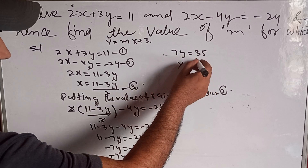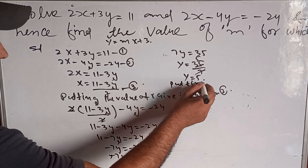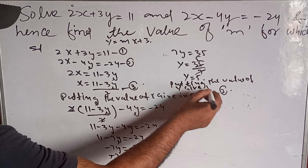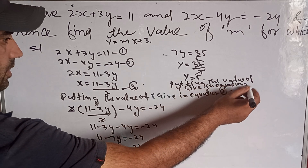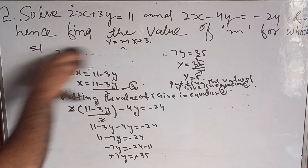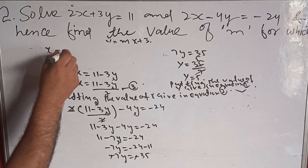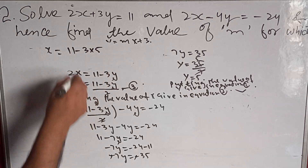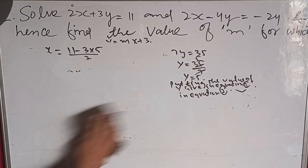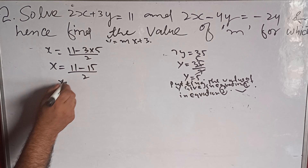Seven fives are thirty-five, so y is equal to 5. Putting the value of y in the third equation: x is equal to 11 minus 3y divided by 2. Substituting y equals 5: x is equal to 11 minus 15 divided by 2, which is minus 4 divided by 2.